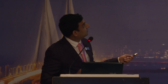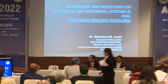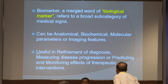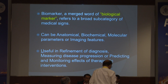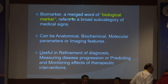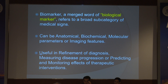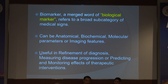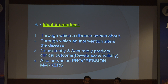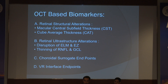The topic given to me by Dr. Chitra is biomarkers and predictors. A biomarker, a merged word for biological marker, refers to a broad subcategory of medical science. It could be anatomical, biochemical, or molecular. It is useful in refinement of diagnosis, progression, predicting and monitoring. An ideal biomarker reflects how a disease comes about, through which an intervention alters the disease, consistently and accurately predicts the clinical outcome, and serves as a progression marker.